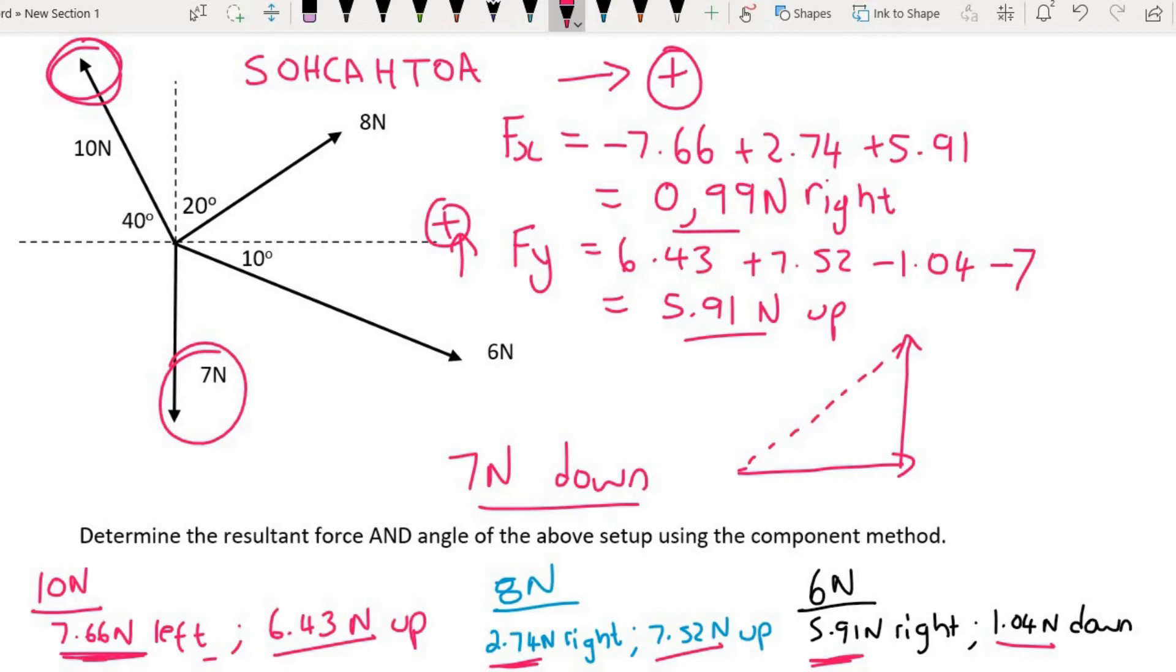To work out the result, I'm just going to fill in these values. Then I simply use Pythagoras to find the result, which I'll call FR. If you use Pythagoras, it's the square root of 0.99 squared plus 5.91 squared. That will give us an answer of 5.99 newtons, which is pretty close to the construction answer of 6 newtons that we got in number three.